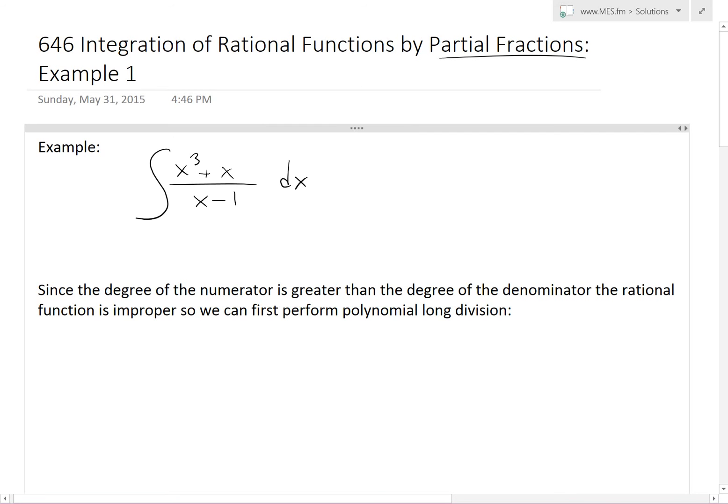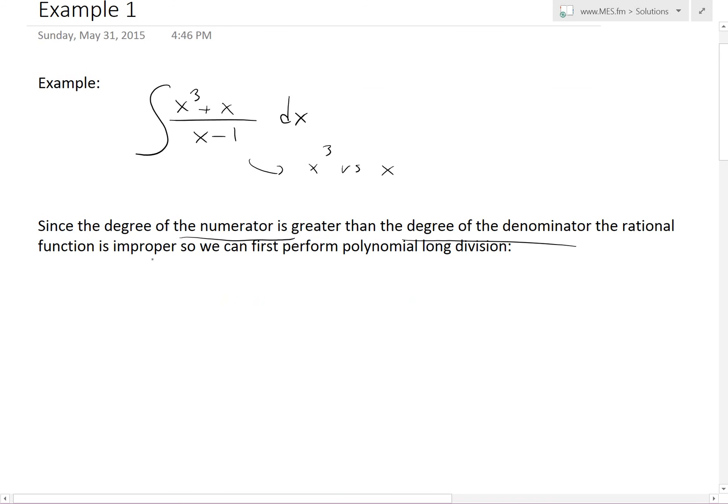In this integral, the degree of the numerator (x³) is greater than the degree of the denominator (x), so 3 to 1. The rational function is improper, so we first need to use polynomial long division to break this down.